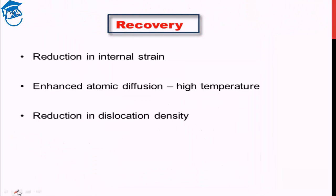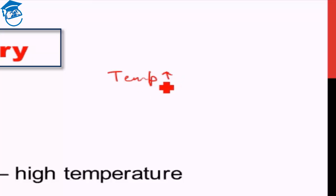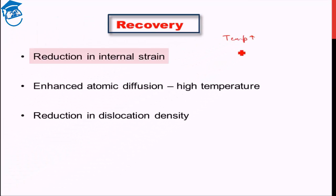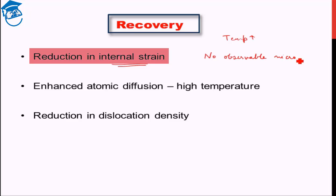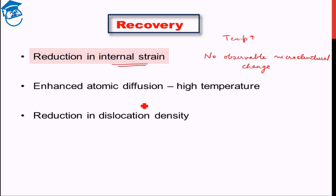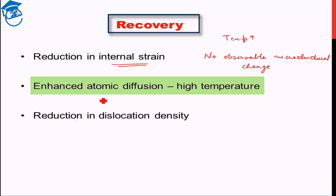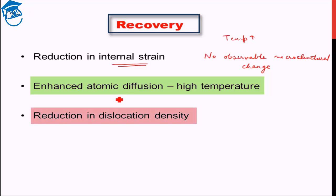In recovery, the material is exposed to a slightly higher temperature. This increase in temperature leads to a reduction in internal strain, but there is no observable microstructural change. This is possible because at higher temperature there is enhanced atomic diffusion — atoms diffuse faster, resulting in a slight reduction in dislocation density, which leads to a reduction in internal strain.